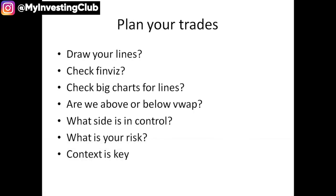Have you checked Finviz? Do you know the float of the stock — is it a higher float or a lower float stock? All these things matter. You can check BigCharts for lines as well — it's part of Bao's process, and a lot of people use BigCharts for lines. Are we above or below VWAP? Who's trapped in this scenario? Usually pre-market we start above VWAP, but sometimes stocks have faded and trapped longs. What side is in control? Do you have all your levels drawn and are you prepared for the open?